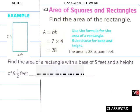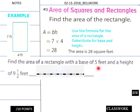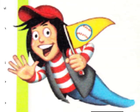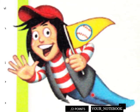Welcome back everybody. Our solution for today's bell work — find the area of a rectangle with a base of five feet and a height of nine and one-half feet — comes out to 47 and one-half square feet.